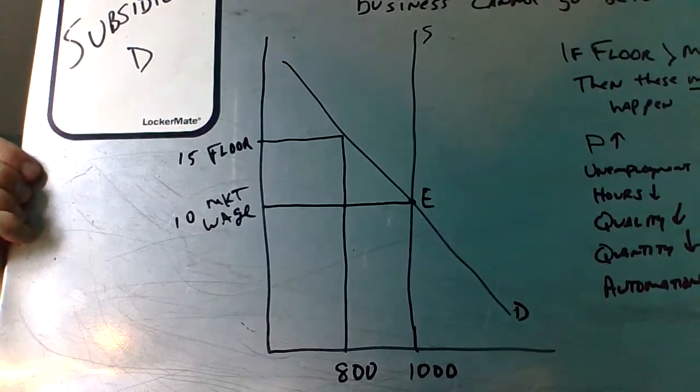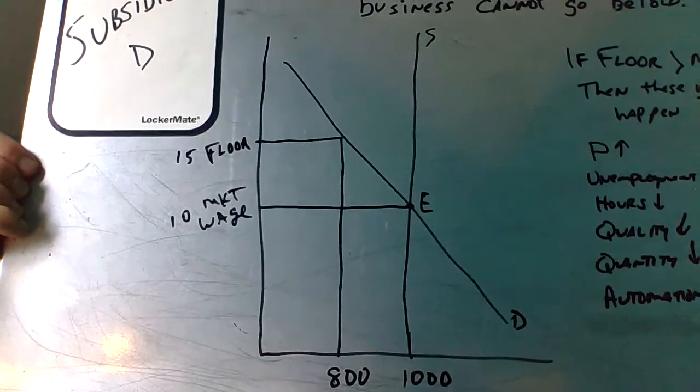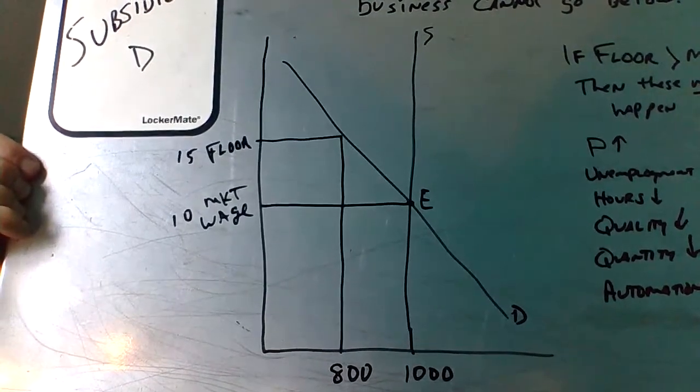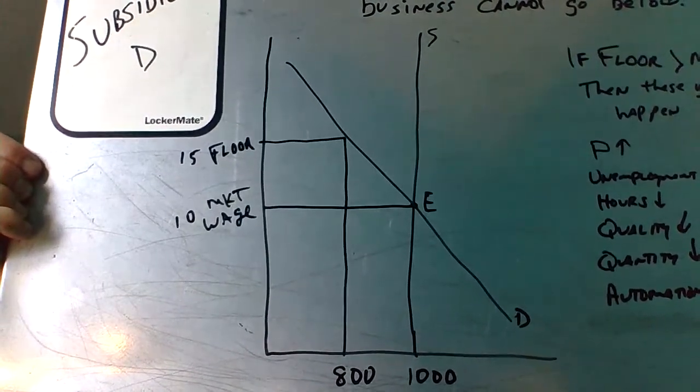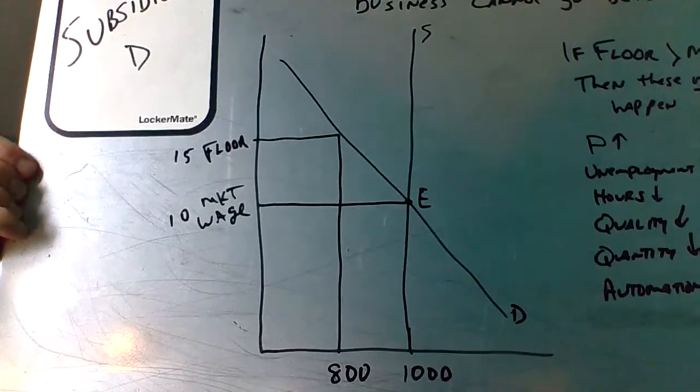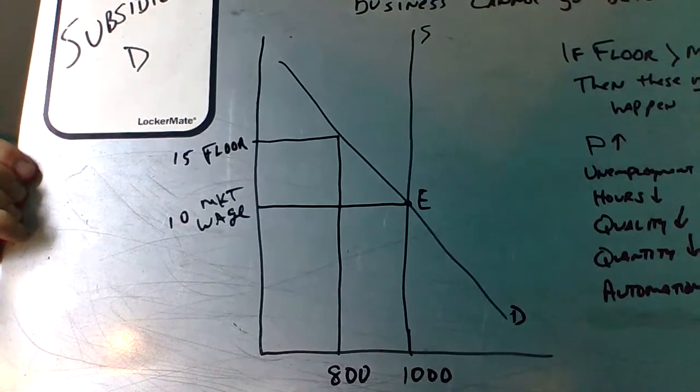If you've got a thousand teenagers that could work, that's not going to change much. So if you notice, the supply curve is supposed to be straight up and down, which means it's fixed. So you've got a thousand workers today, you've got a thousand workers tomorrow, and so on and so forth.